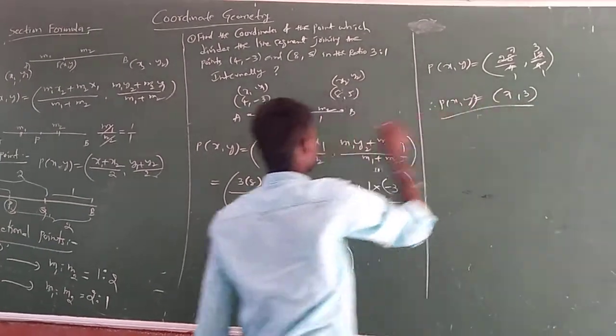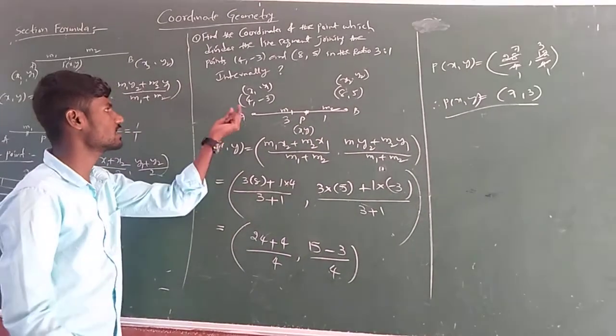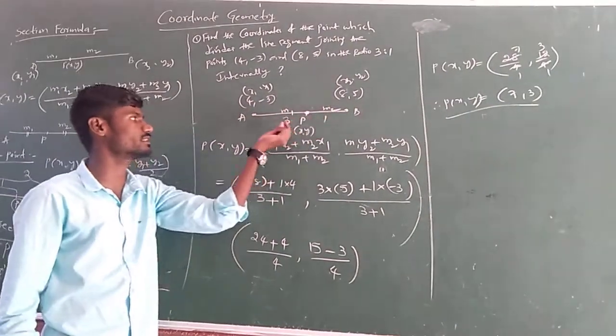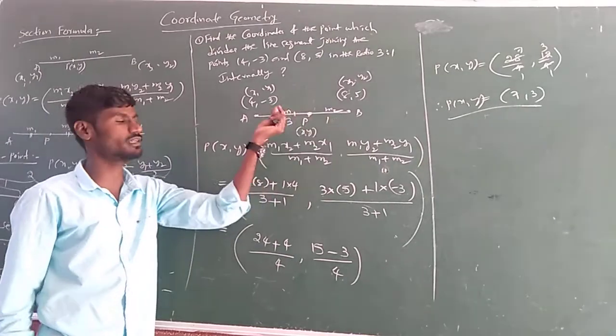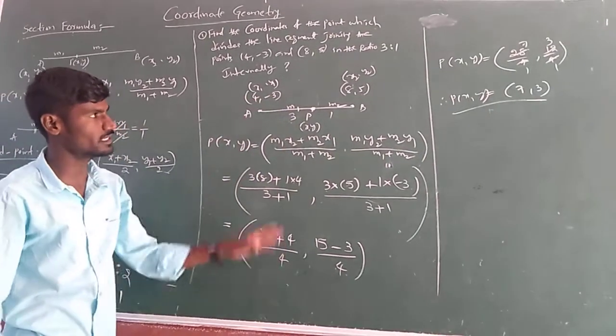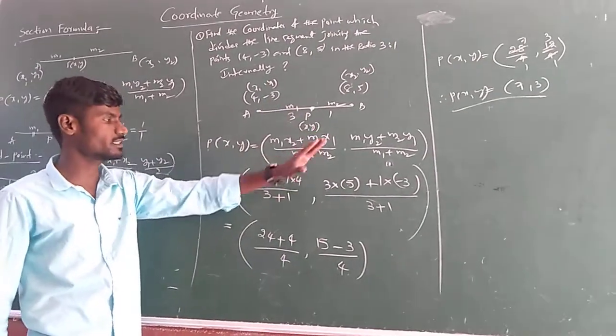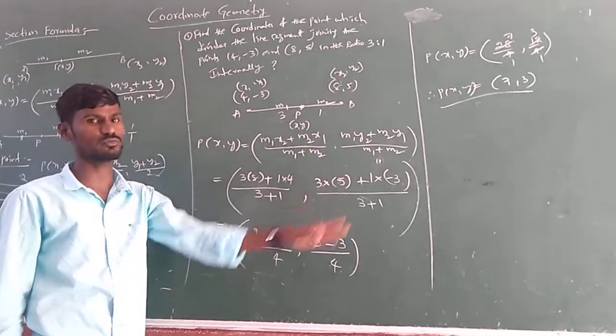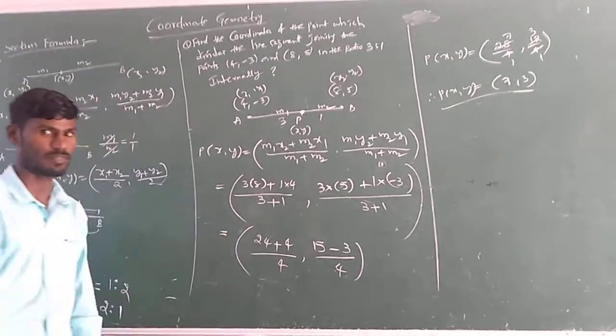This point 7 comma 3 divides these two given points in the ratio 3 is to 1 internally. So this is way of finding section formula. They may ask this type of problem for 2 or 4 marks. Let us discuss some more problems in this topic.